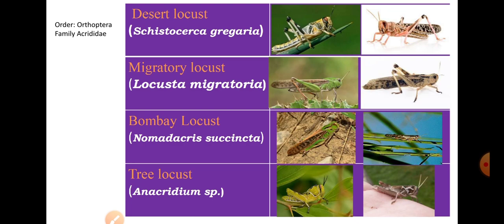Desert locust — Schistocerca gregaria — belongs to the order Orthoptera and family Acrididae. Four major locust species found in India: (1) Desert locust: Schistocerca gregaria, (2) Migratory locust: Locusta migratoria, (3) Bombay locust: Nomadacris succincta, (4) Tree locust: Anacridium species. Desert locust is the most dangerous, as it moves in groups (swarms) and damages large numbers of crops. The main reason for swarming is serotonin — a compound produced in the locust brain, as proven by Oxford University — which gives them the habit of moving in groups, leading to destruction on a larger extent.